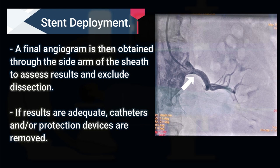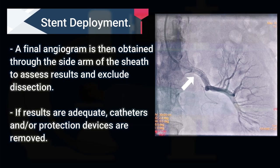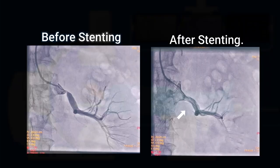When results are adequate, catheters and protection devices are removed from the aorta. Now you can see the pre- and post-stenting images of the renal artery. Thank you for watching this video, have a great day.